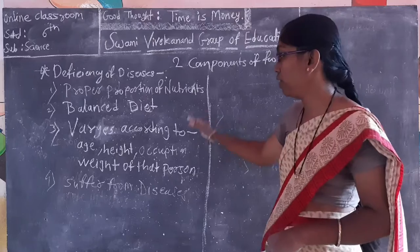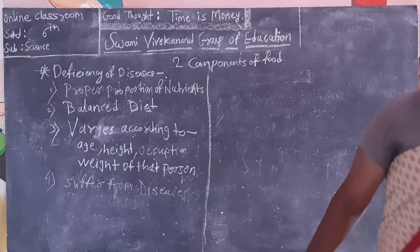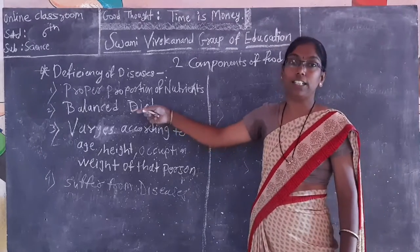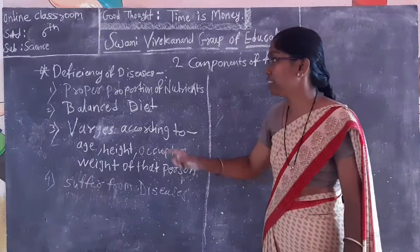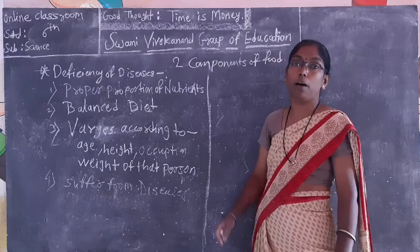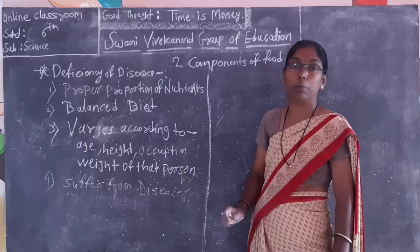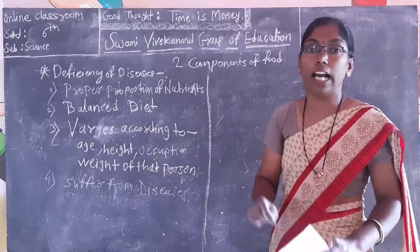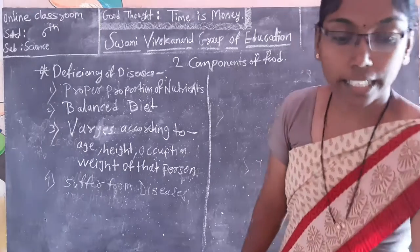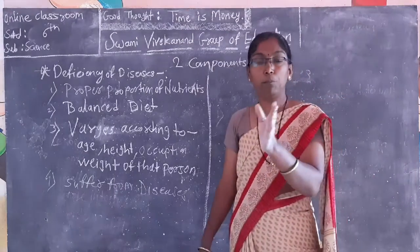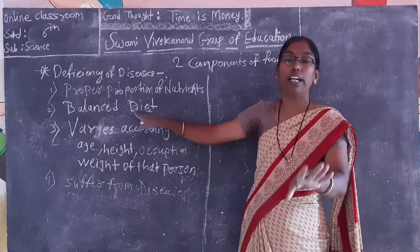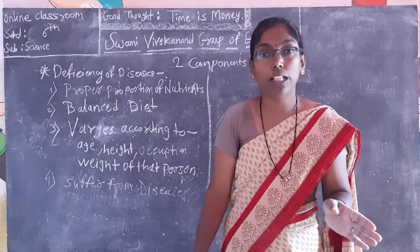Deficiency of diseases carries on these four parts. First, a proper proportion of nutrients is required. We get that proper proportion through balanced diet. Through balanced diet, we get the proper proportion of nutrients and proper immunity. Balanced diet varies from person to person — first is age. A small child and an older man are different in age, so the diet given to each is different.